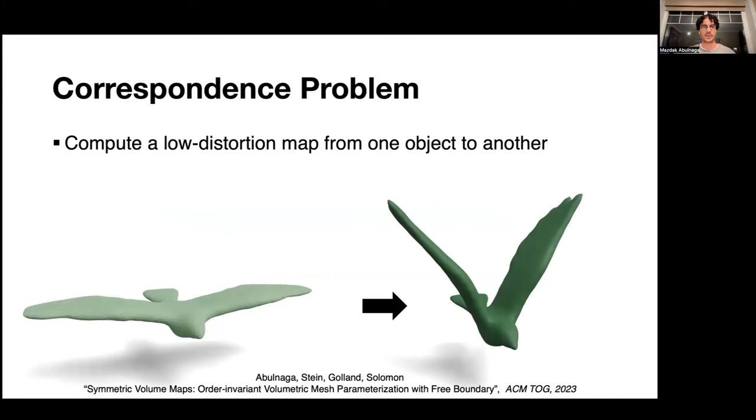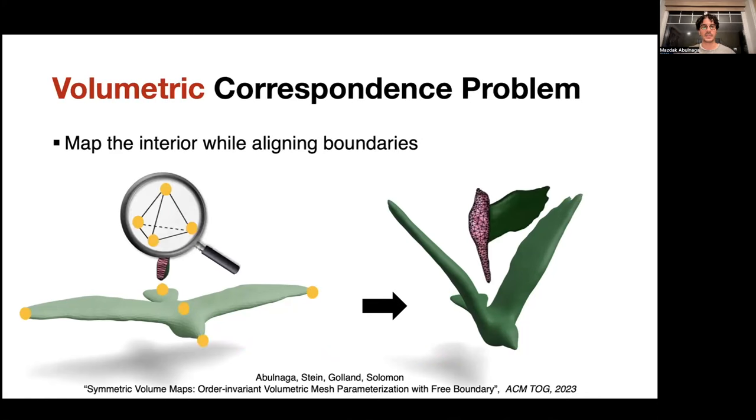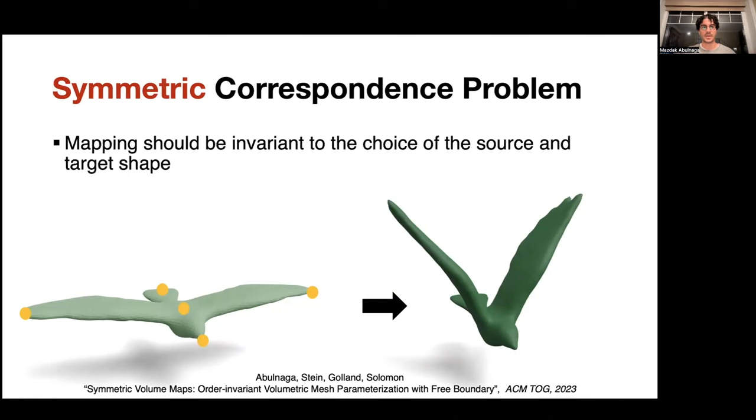In one work, we sought to tackle the correspondence problem, which is to compute a low distortion map from one object to another. The map can displace vertices from a source mesh to a target, for example. In the volumetric case, one must also map interior vertices to the interior of the target, while aligning boundaries. In particular, we want our method to be symmetric, and that it should be invariant to the choice of the source and the target shape. We achieve this by mapping bidirectionally using symmetrized distortion energies.